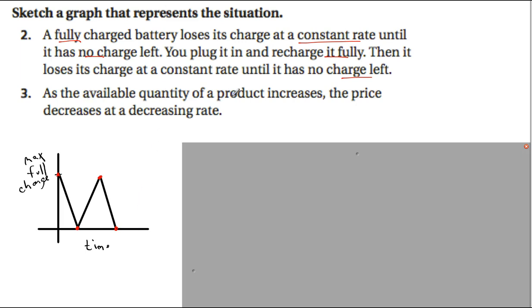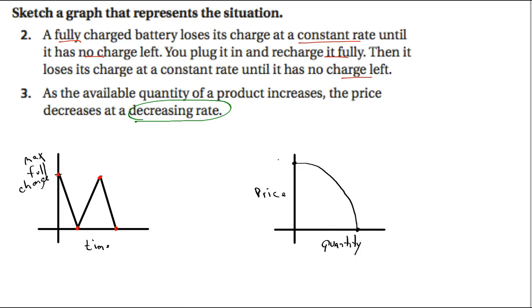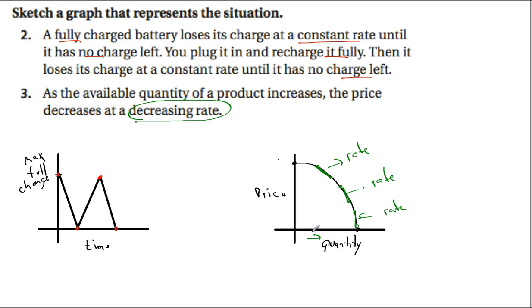Another example: as the availability or quantity of a product increases, the price decreases at a decreasing rate. Label y-axis as price, x-axis as quantity. This should be a non-linear curve — the price decreases, but at a decreasing rate, meaning the curve flattens out. The rate of decrease slows down as you get closer and closer to a higher quantity.